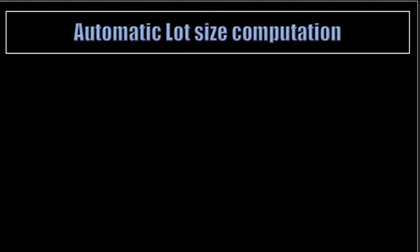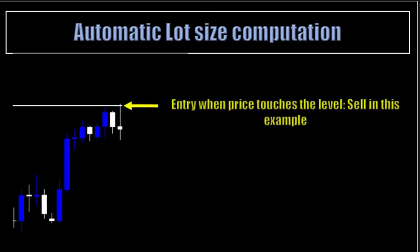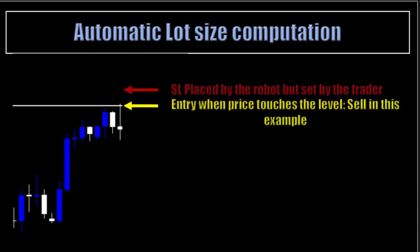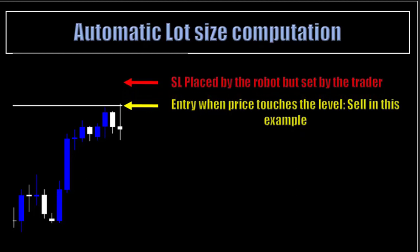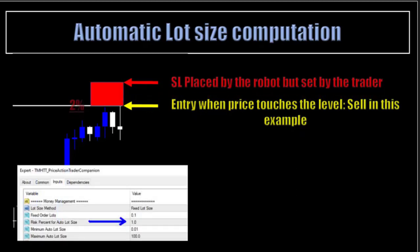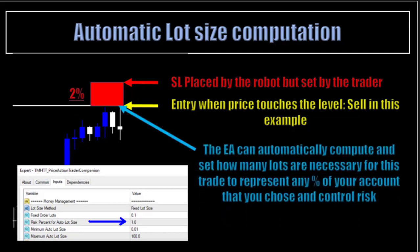Automatic Lot Size Computation. On this chart, the entry is when price touches the level and it's a sell in this example. Then the Stop Loss is placed by the robot, but the distance between the entry and the Stop Loss is set by the trader. In this example, the Expert Advisor will automatically compute and set how many lots are necessary for this trade to represent any percentage of your account that you choose, and you control the risk.